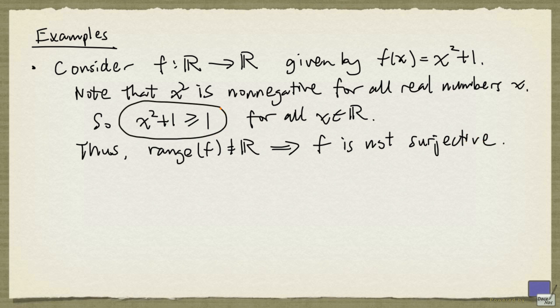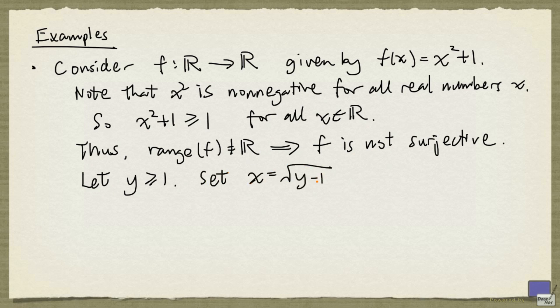All the outputs of f must be at least 1. But is every value at least 1 in the range of f? Let y be a real number at least 1. Because y is at least 1, we can set x to be the real number, the square root of y minus 1.